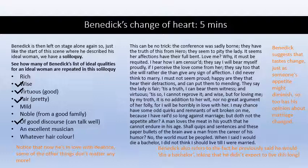Benedict is left on stage alone while he says that — just at the start of this scene where he described his ideal woman we have a soliloquy. See how many of Benedict's list of ideal qualities for an ideal woman are repeated in this soliloquy. Get those notes and annotations into your books and onto the next slide.